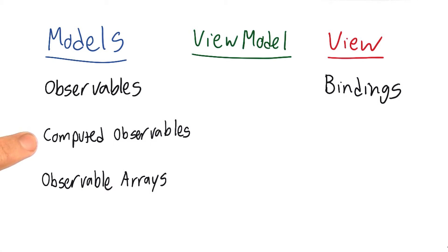We have computed observables, which are computed whenever they're accessed, based on the value of other variables.